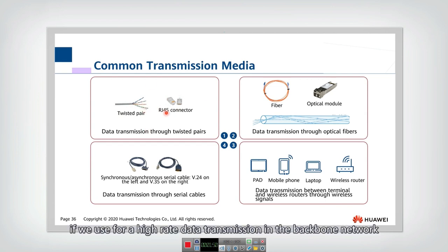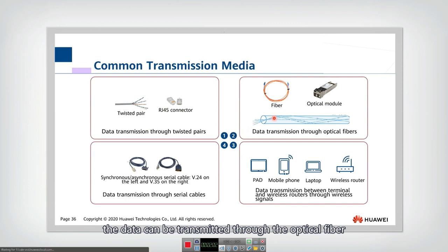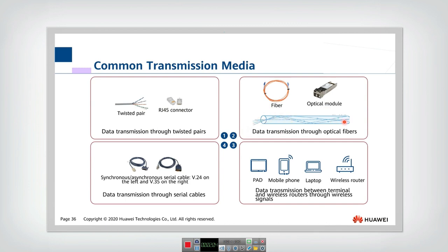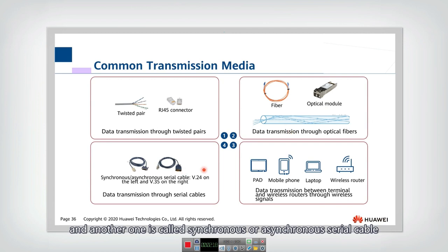If we use high-rate data transmission in the backbone network, then typically we will use fiber transmission. Using this fiber and optical module, the data can be transmitted through the optical fiber. The bit error rate in optical fiber is very, very low, so signals in the fiber can transmit over long distances with very little bit error.